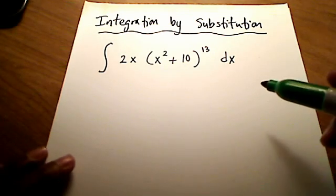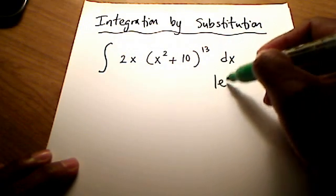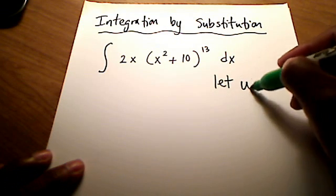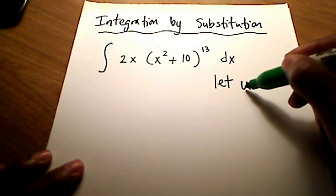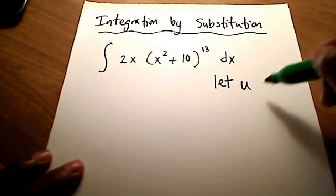So I'll tell you what, I'm going to tell you what it is right now. Let's let U, typically books, calculus books, let the letter U be our variable of substitution, but it can be anything you want. It can be a P, it can be a B, it can be anything you want.